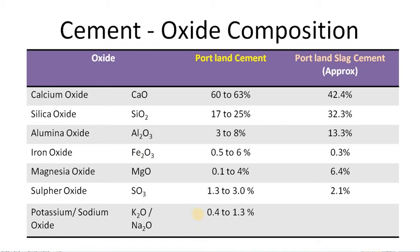Now let us look at the composition of cement. Cement has the following oxides: calcium, silica, alumina, iron, sulfur, and potassium or sodium. According to the percentage of these oxides, the cement type will vary. For Portland cement: calcium oxide is about 60 to 63%, silica is 17 to 25%, alumina is 3 to 8%, iron is 0.5 to 6%, magnesia is 0.1 to 4%, and sulfur is 1.3 to 3%.